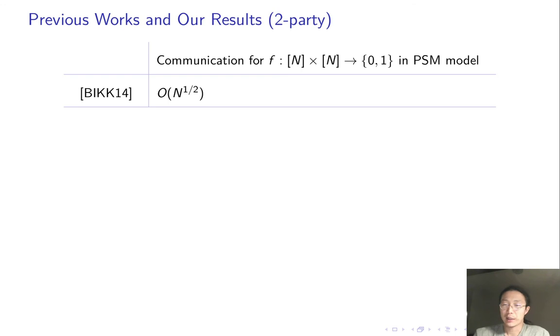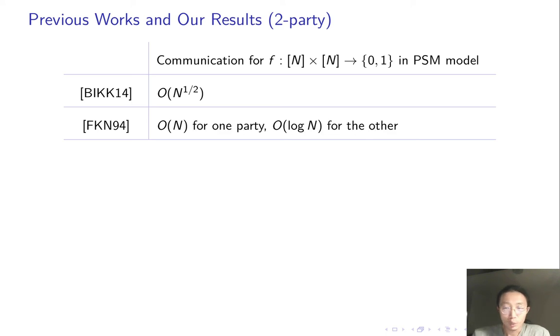For the case of two-party PSM, as we just mentioned, the state of art is square root of n by Beimel, Ishai, Kushilevitz. The earlier FKN achieves n communication, which is worse but has a very nice feature. Only one party needs to send n bits. The other party sends only a few bits. So compared to BIKK, FKN trades the communication complexity of one party for the other.